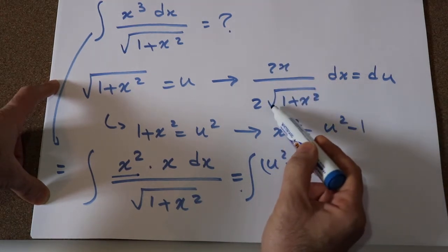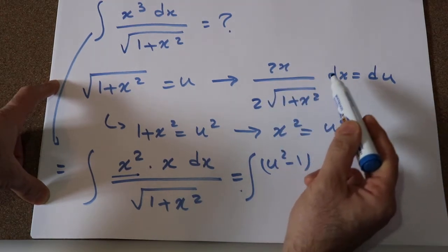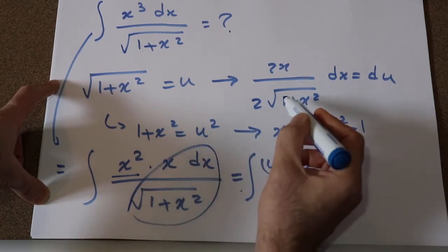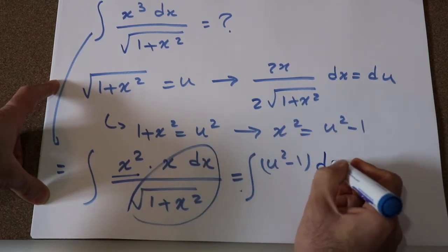Because x divided by square root of 1 plus x² dx is equal to du. That is exactly the same expression as this one.